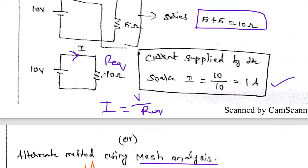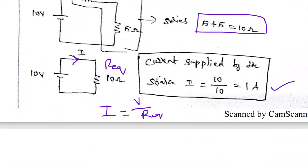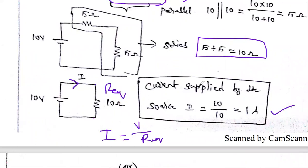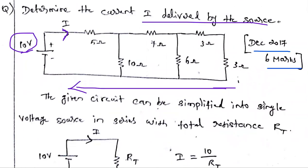Both methods give the same answer. Compared to mesh analysis, the network reduction method is easier for this type of problem. You can choose any method when the method is not specified. This was the December 2017 problem. In the next video, we will solve other important university problems using mesh analysis. Thanks for watching — a separate playlist for circuit analysis covering Kirchhoff's laws, Ohm's law, and network reduction is available on the channel.